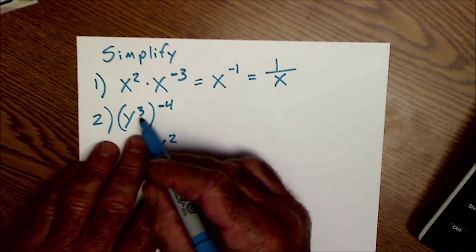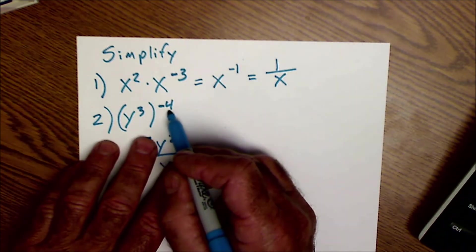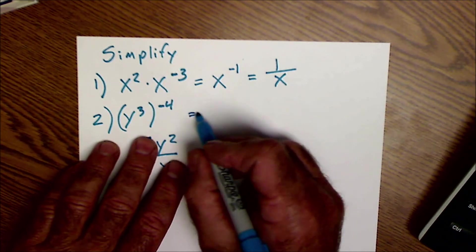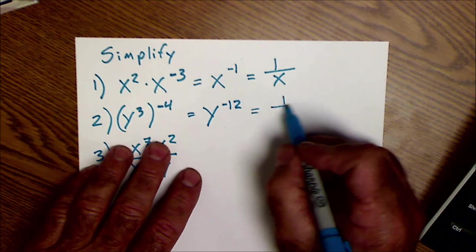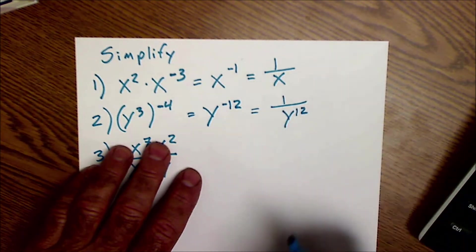Here I have y to the third, the power to the negative 4. I multiply that, you get y to the negative 12. And again, to make it positive, 1 over y to the 12th.